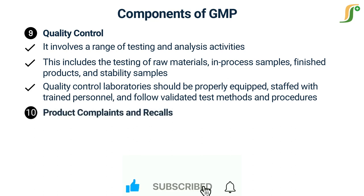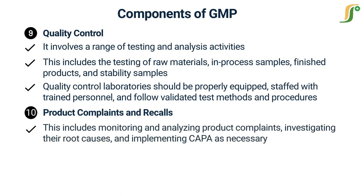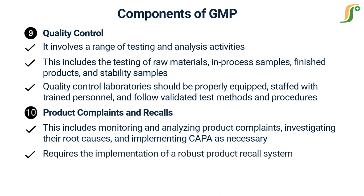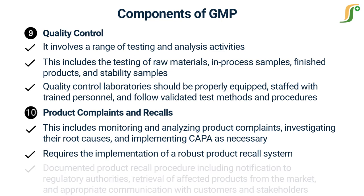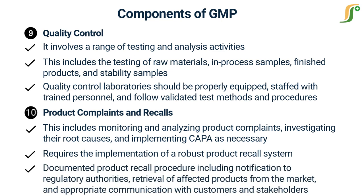The tenth component is Product Complaints and Recalls. GMP necessitates the establishment of procedures for handling product complaints and investigating any quality issues. This includes monitoring and analyzing product complaints, investigating their root causes, and implementing corrective and preventive actions. If a product defect poses a risk to patient safety, GMP requires the implementation of a robust product recall system, including a documented recall procedure outlining steps for notification to regulatory authorities, retrieval of affected products, and appropriate communication with customers and stakeholders.